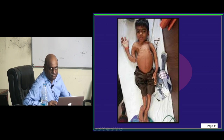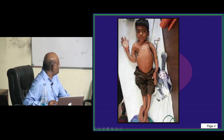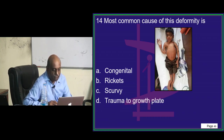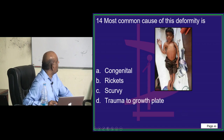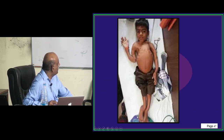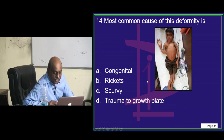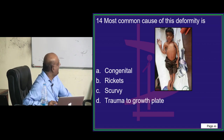This is called wind-swept deformity. Also note the costochondral junction thickening visible in the image. Based on this, what is your diagnosis — question 14? Vanaparthi Vanishri proposes B, Suhani Patak also says rickets. That is right — rickets is the most common cause of this deformity.